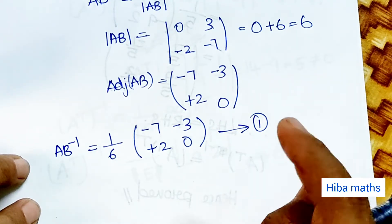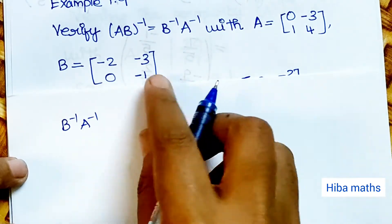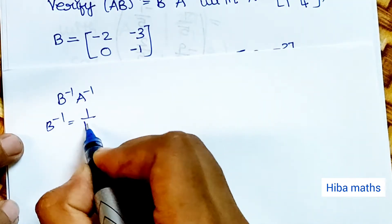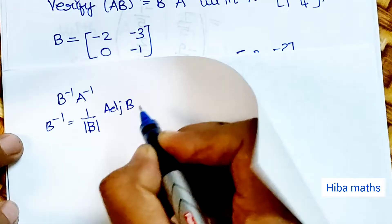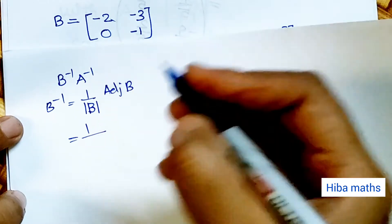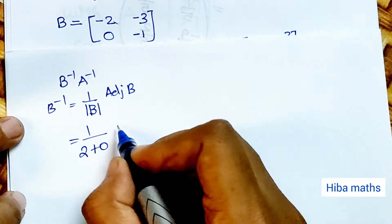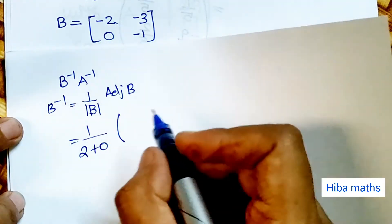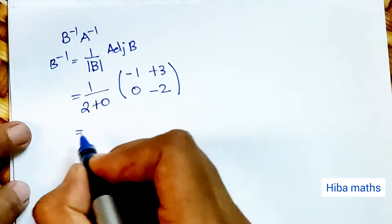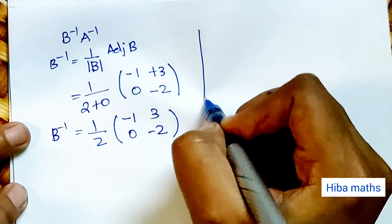Same procedure for the RHS: A inverse and B inverse are computed separately, then multiplied. Next, B inverse equals 1 by modulus of B into adjoint of B. Modulus of B equals −2 times −1 minus −3 times 0, which equals 2. Adjoint of B: diagonal interchange gives [−1; −2] and second diagonal sign gives −1, −2. So B inverse equals 1 by 2 into [−1, 3; 0, −2].